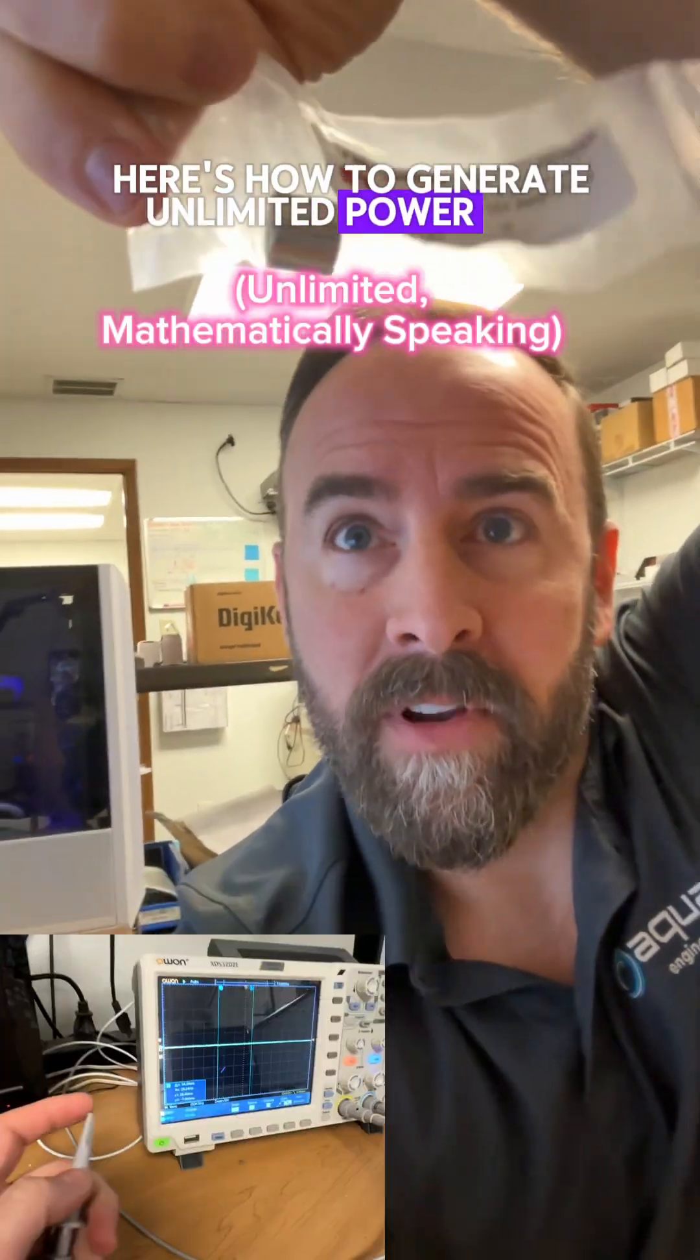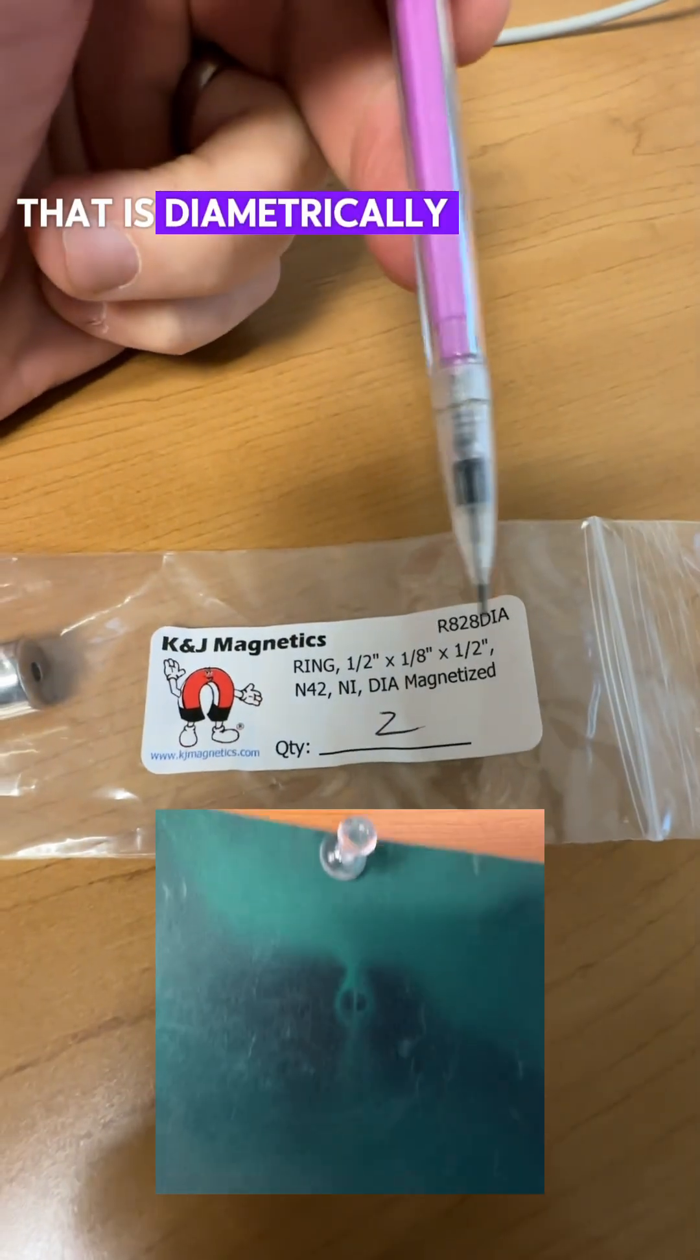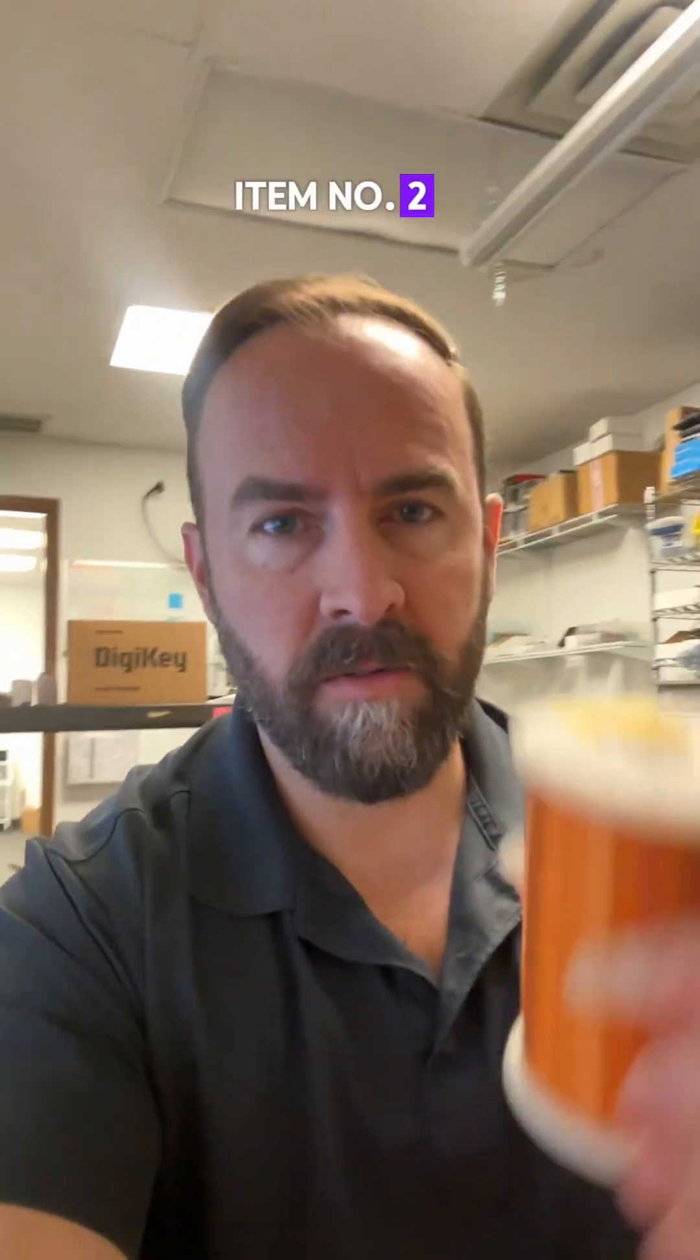Here's how to generate unlimited power for your electronic devices. First thing you're going to want here is a rare earth magnet that is diametrically magnetized. Item number two is going to be magnet wire.